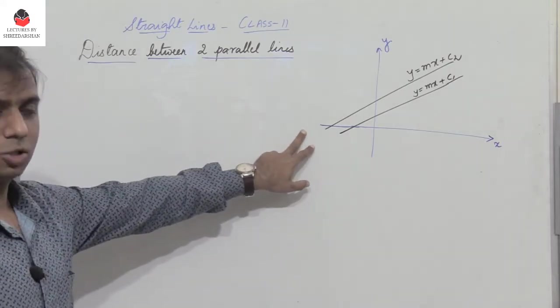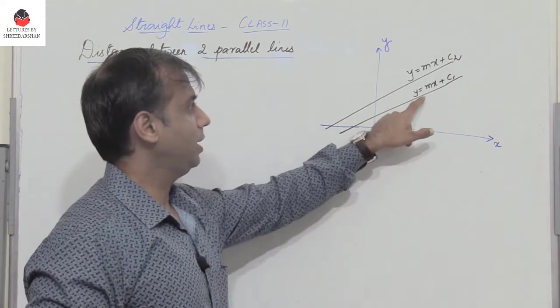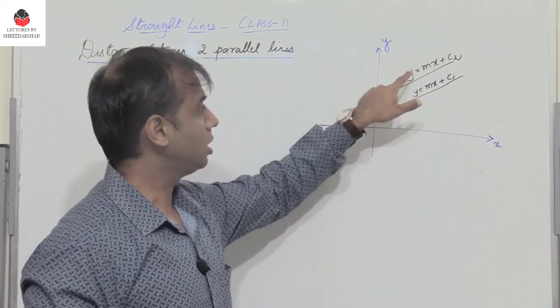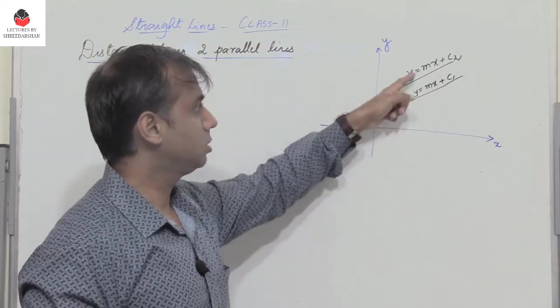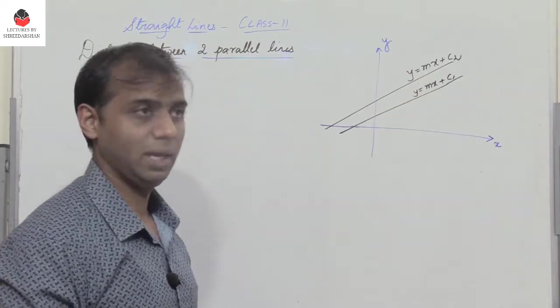So consider two parallel lines as shown where the first one is y equals mx plus c1, the second one is y equals mx plus c2. Since both the lines are parallel, the slopes are the same. So the slope of both the lines is m.